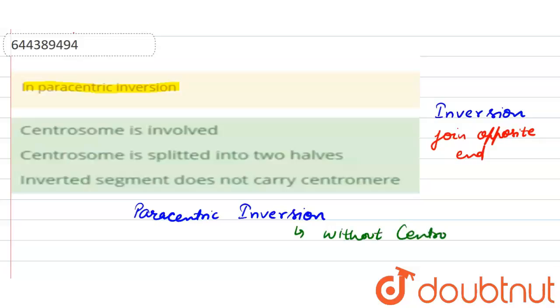In this type of mutation, here, without centromere, inverted segmental length. Like this one is a centromere, okay, and here the gene is like A, B, here C and D. If the arrangement is like this, where this one is...